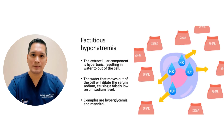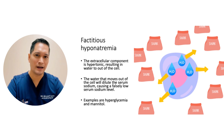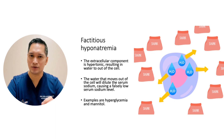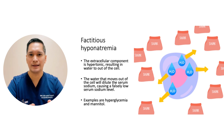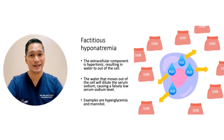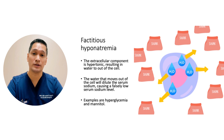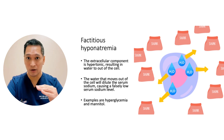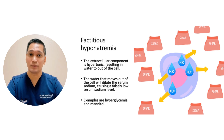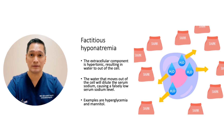A high serum osmolality of more than 295 with hypernatremia is associated with fictitious hypernatremia. In this condition, the extracellular component is hypertonic, causing water to move out of the cell. The water that moves out of the cell will dilute the serum sodium, causing a falsely low serum sodium level. Examples are hyperglycemia and patients receiving mannitol.